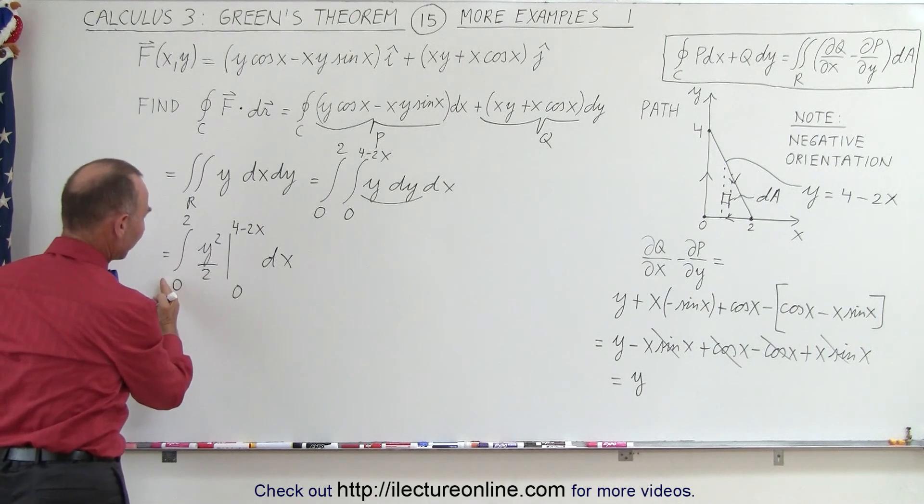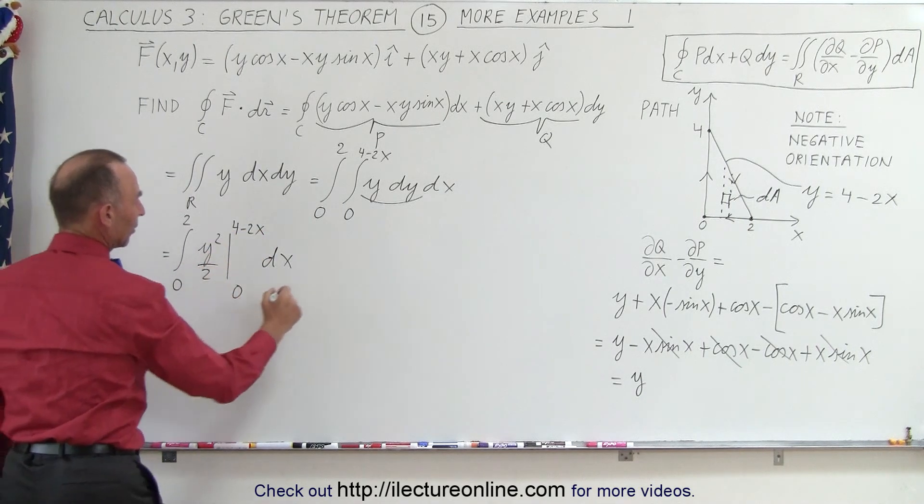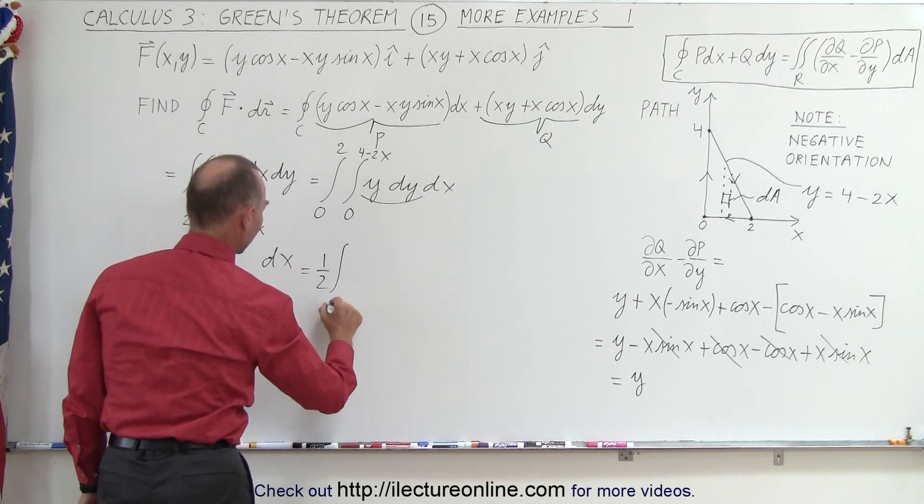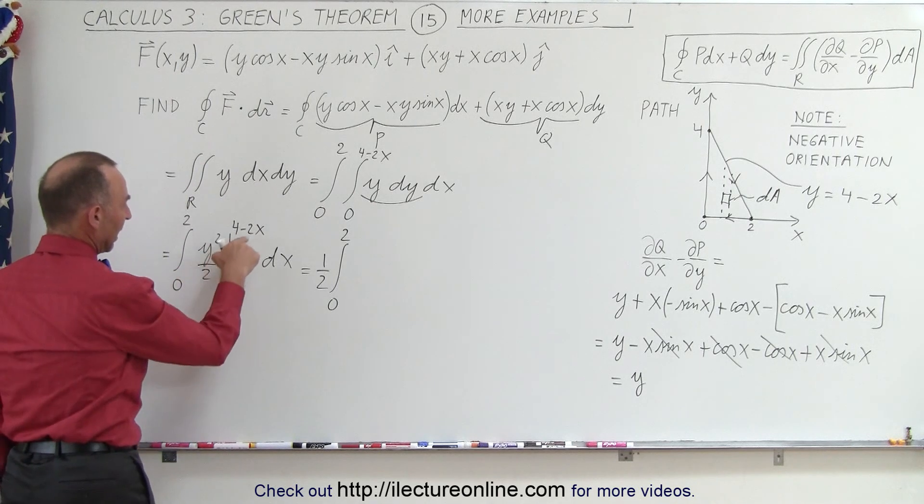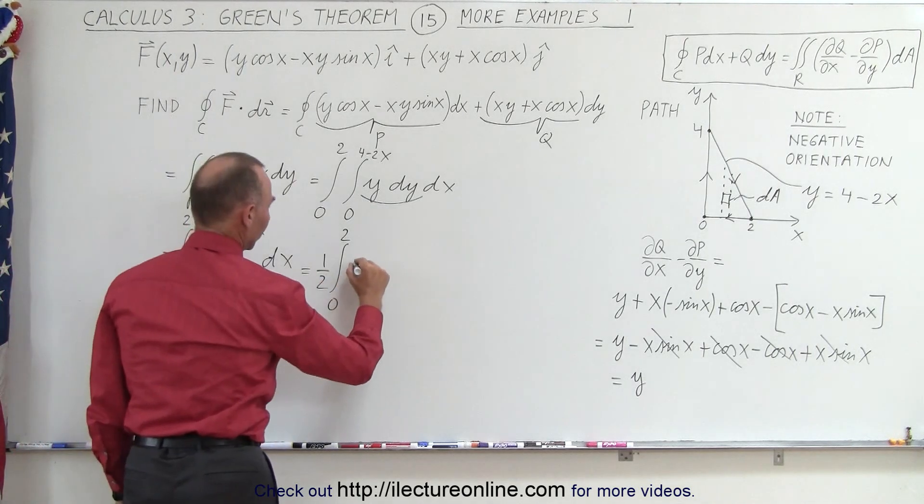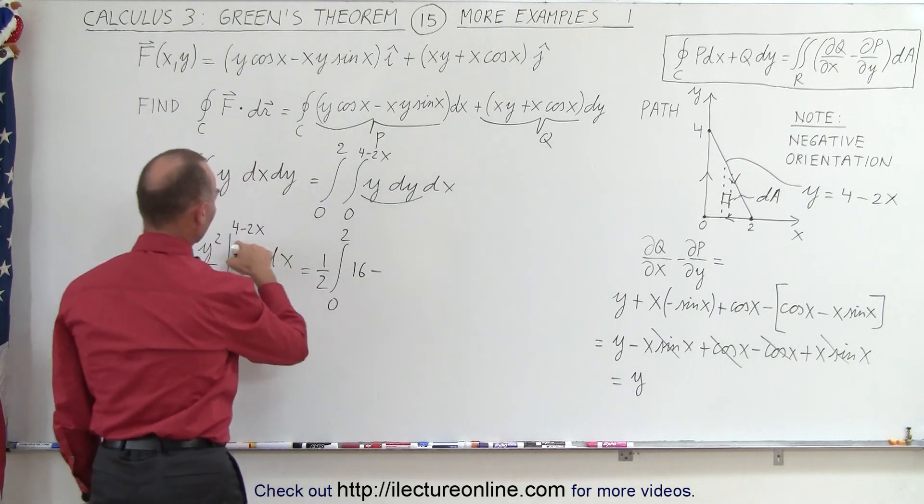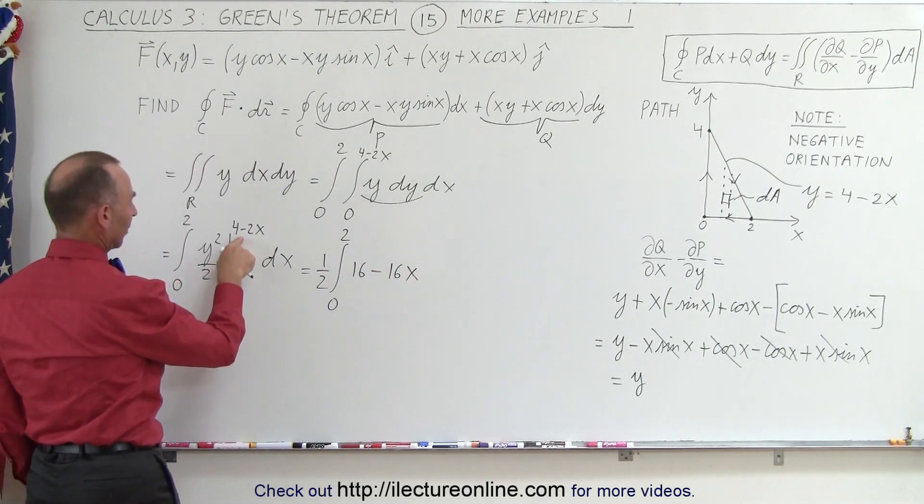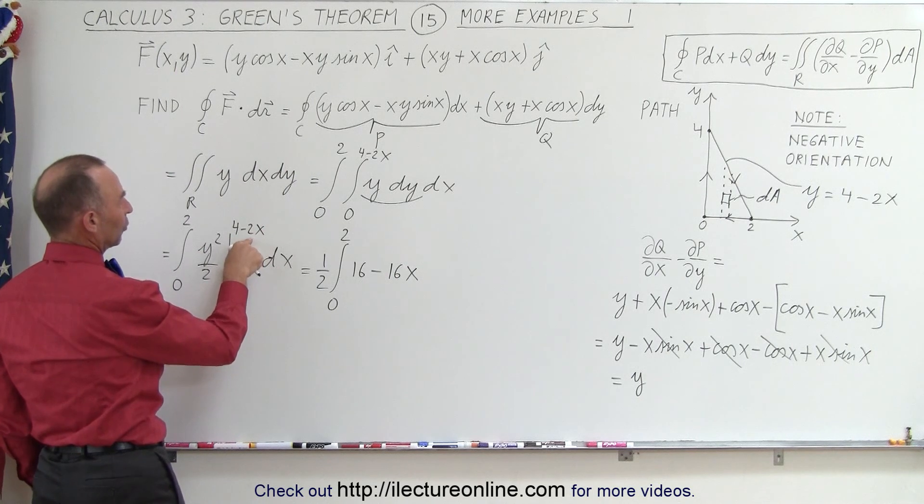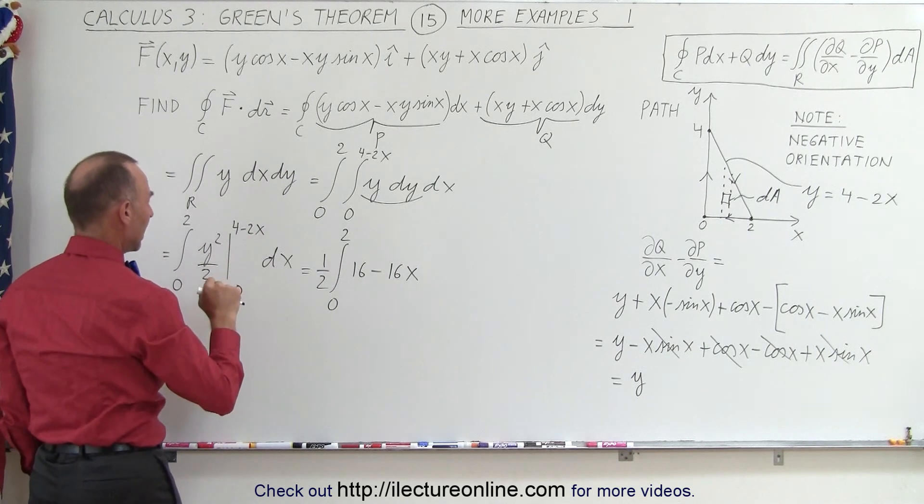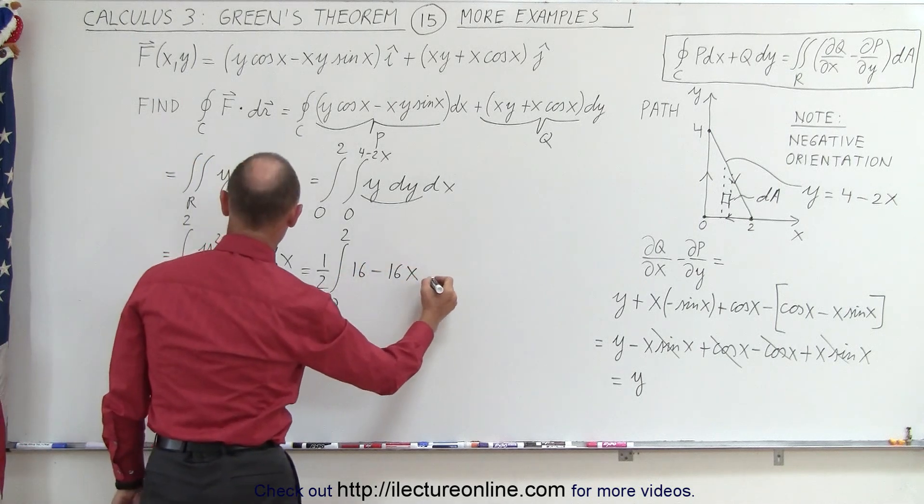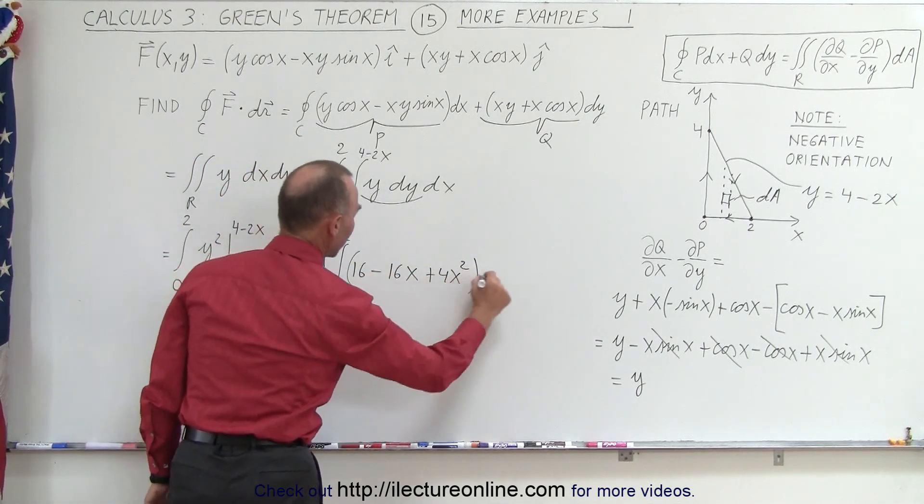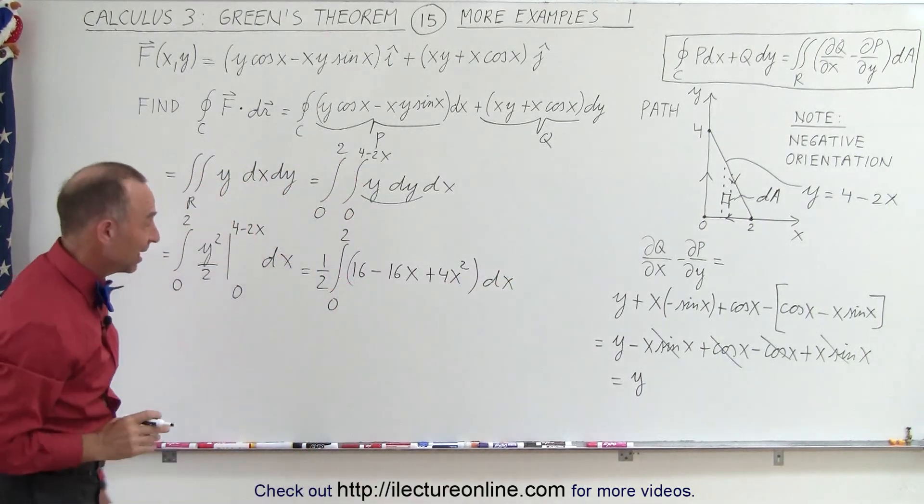We can pull out a 1 half and then plug in the upper limit. When I plug in the lower limit, we get nothing. So this would be equal to 1 half times the integral from 0 to 2 when we integrate over the X direction. And plug in this in here. That'll give us 16 minus 16X, I believe. So that's twice the product of those two. That's minus 8X times 2. And then we have plus 4X squared. The whole thing times DX. And now we're ready to do our second integral.